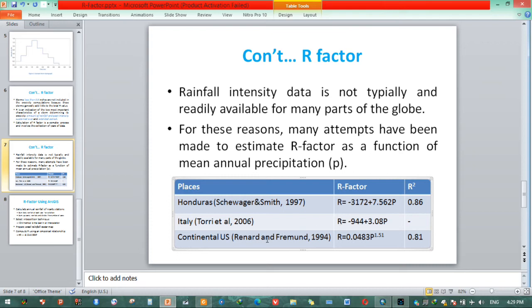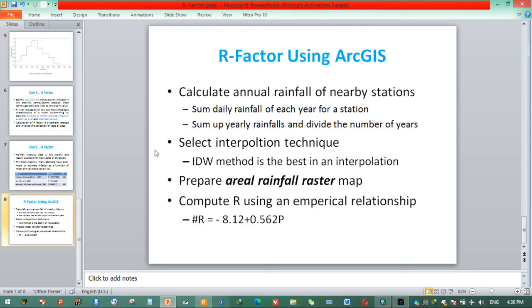The other is in United States, continental US regions. According to Renard and Freimund 1994, they found this equation which is used in continental US regions, having 0.81 R square value.